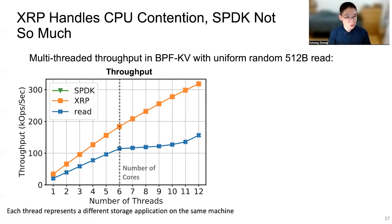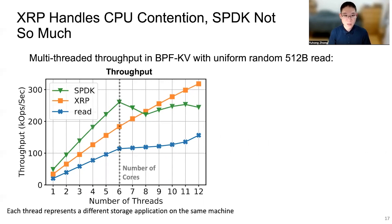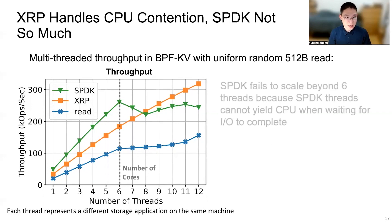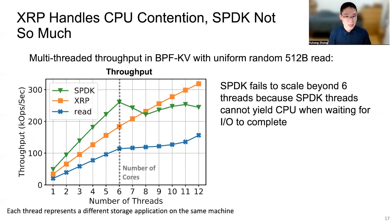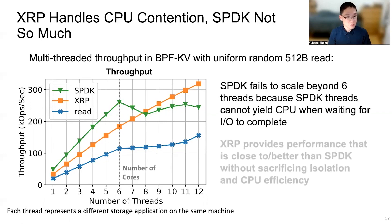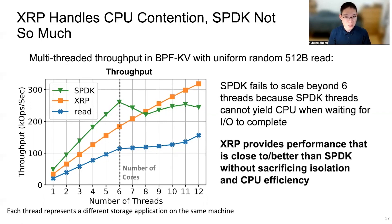To see how XRP compares to kernel bypass, the performance of SPDK is added to the throughput graph. This multi-threaded experiment approximates a multi-tenant environment where each thread represents a different storage application running on the same machine. When the number of threads does not exceed the number of cores, SPDK always achieves better throughput since it doesn't incur the overhead of the kernel storage stack. However, SPDK fails to scale beyond the sixth thread because SPDK threads cannot yield CPU when waiting for I/O to complete. XRP provides performance close to or even better than SPDK without sacrificing isolation and CPU efficiency.